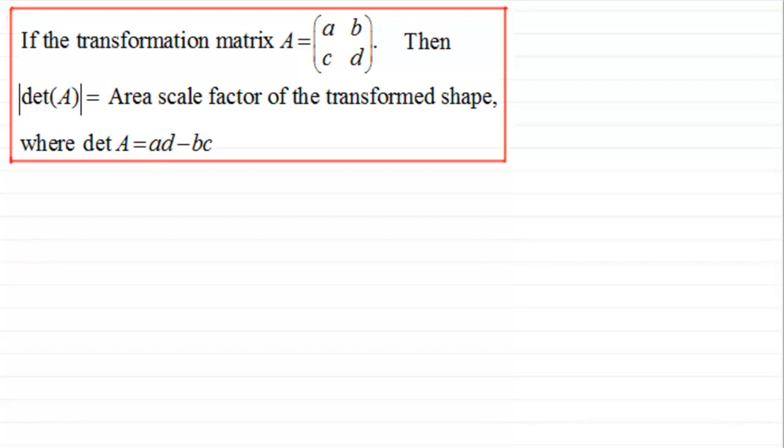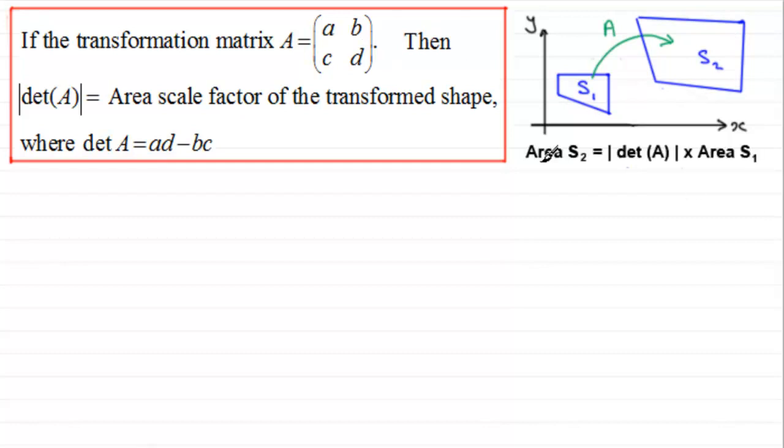In other words, what we've got is that if we have any shape, let's call it S1, and we transform it into another shape by applying the matrix A to it, we end up with another shape—might well be distorted from the original shape—let's say we call it S2. Its area may well change. What this is saying is that the area of this shape here, S2, is equal to the modulus of the determinant of the matrix A, multiplied by the area of the original shape, S1.